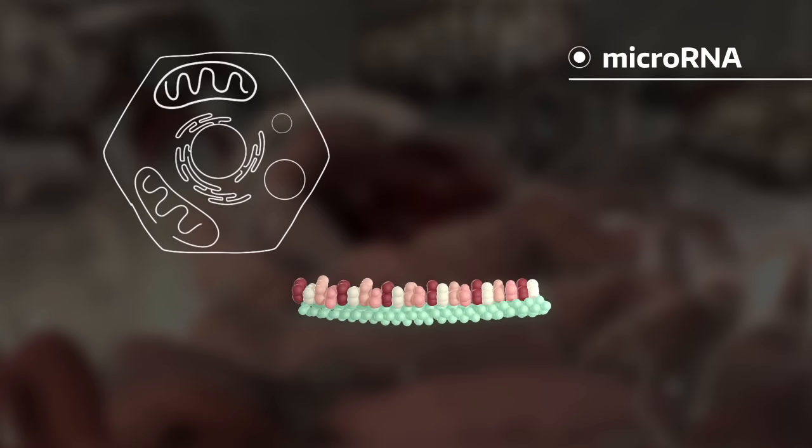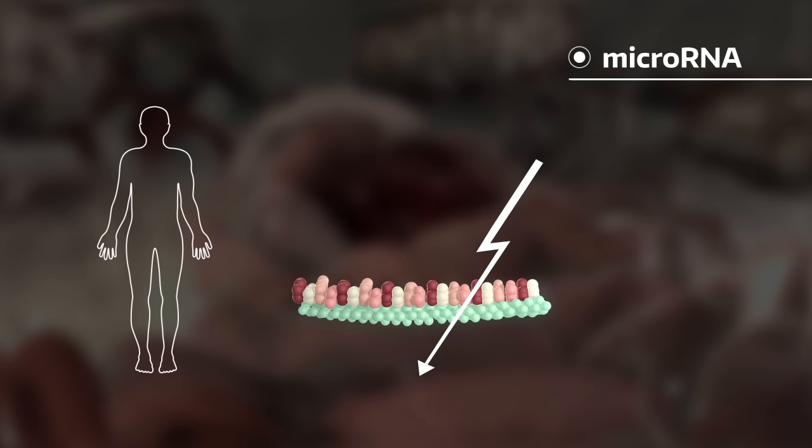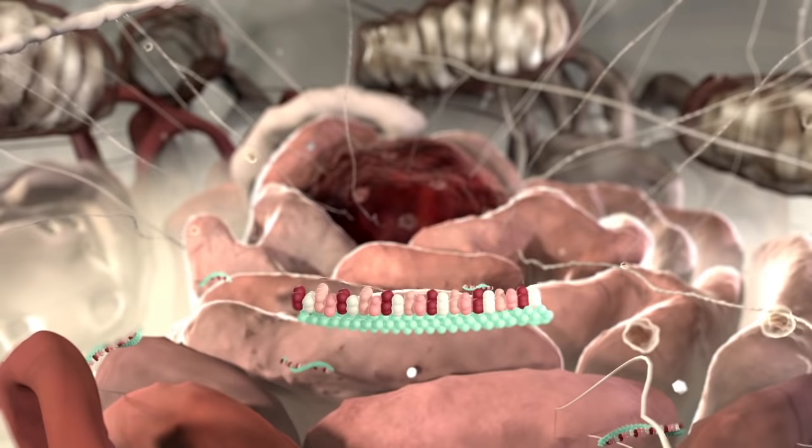MicroRNAs participate in the regulation of the cell from its development to its death. Their dysregulation can have serious consequences for our body and can cause a range of diseases such as cancer and heart disease.